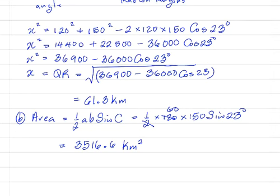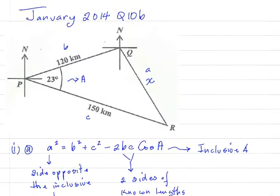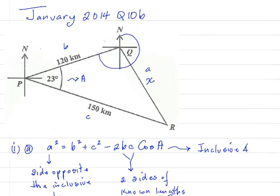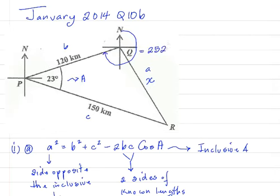Part II says the bearing of P from Q is 252 degrees. Calculate the bearing of R from P. We're told the bearing of P from Q is 252 degrees, so let's put in the angle that represents that bearing. At Q, I'm going to start at north and come around until I get to the line that connects P and Q. So this angle here is 252 degrees. And they're asking us to determine the bearing of R from P.